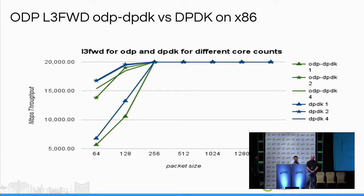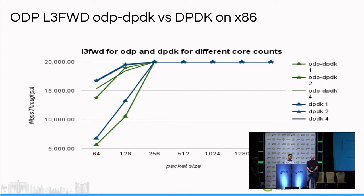A question about the traffic generator: we used hardware — a test center from Spirent. Another question: apart from throughput, did you measure other parameters like latency? Currently no. We only tested throughput in this testing. We plan to investigate latency measurement scenarios in the future.